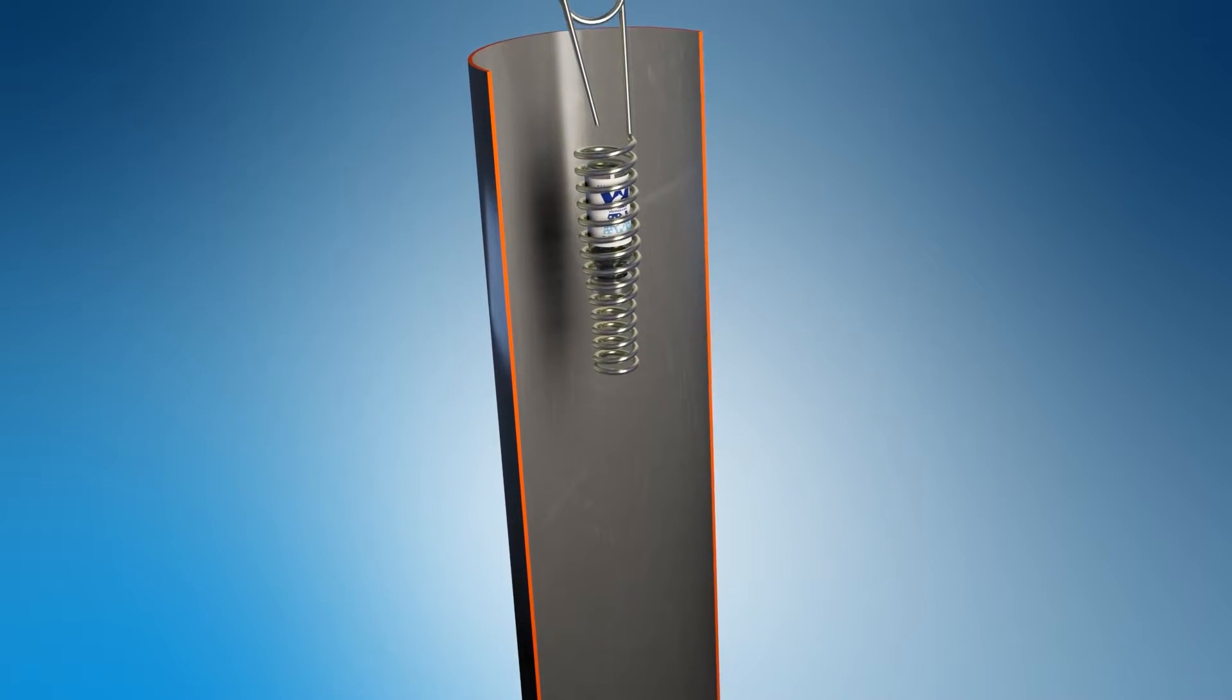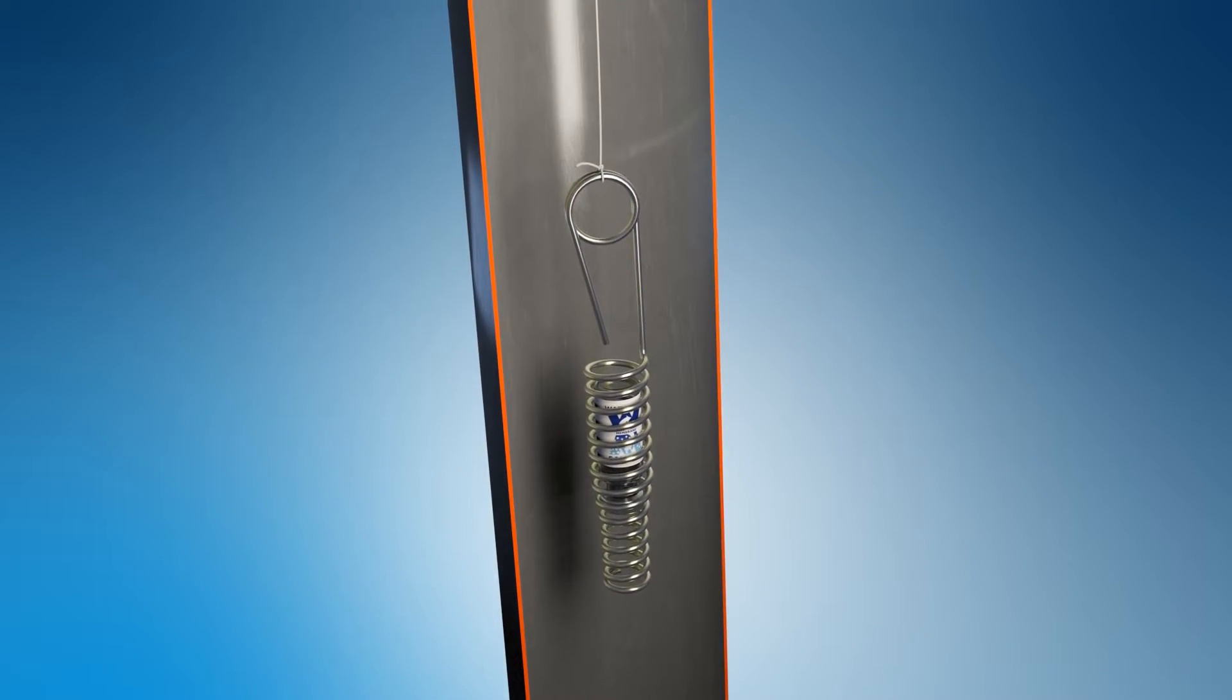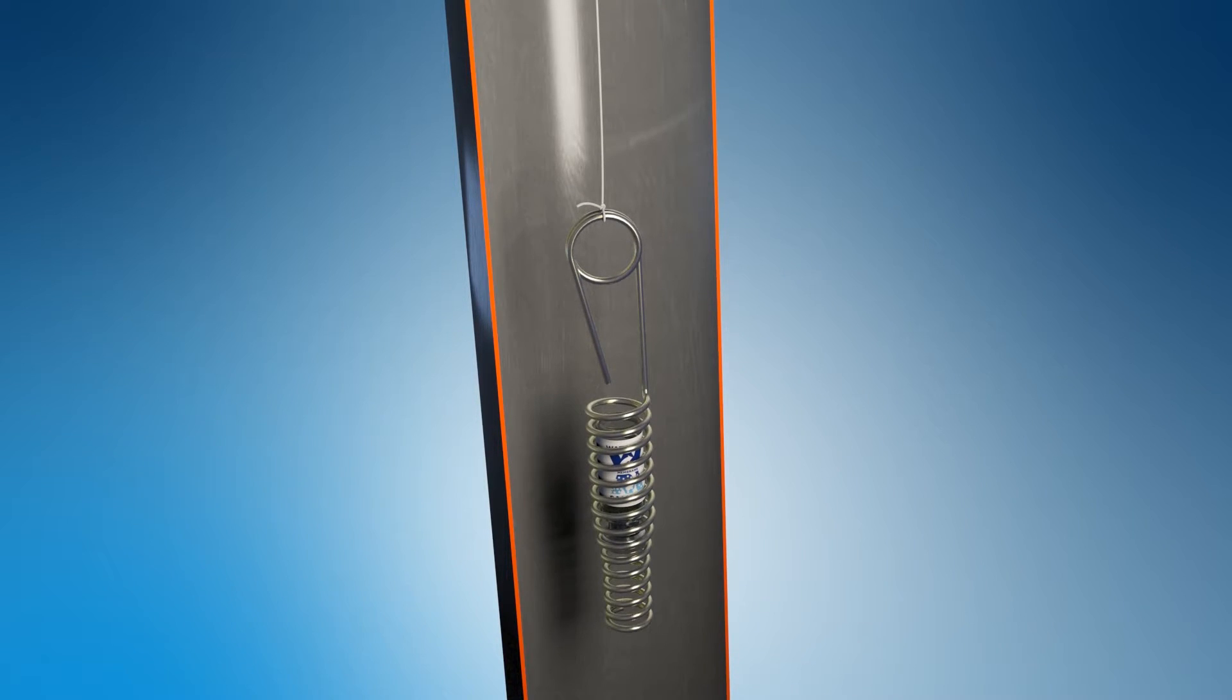For soil vapor extraction and sub-slab depressurization systems, use the wire hanger to hang the sampler in vent pipes.